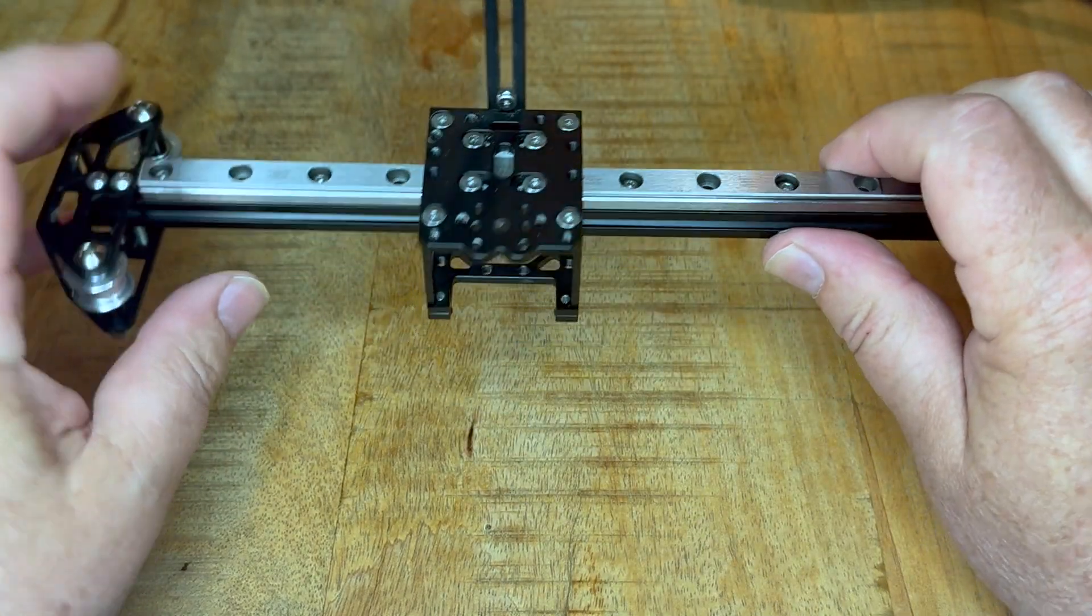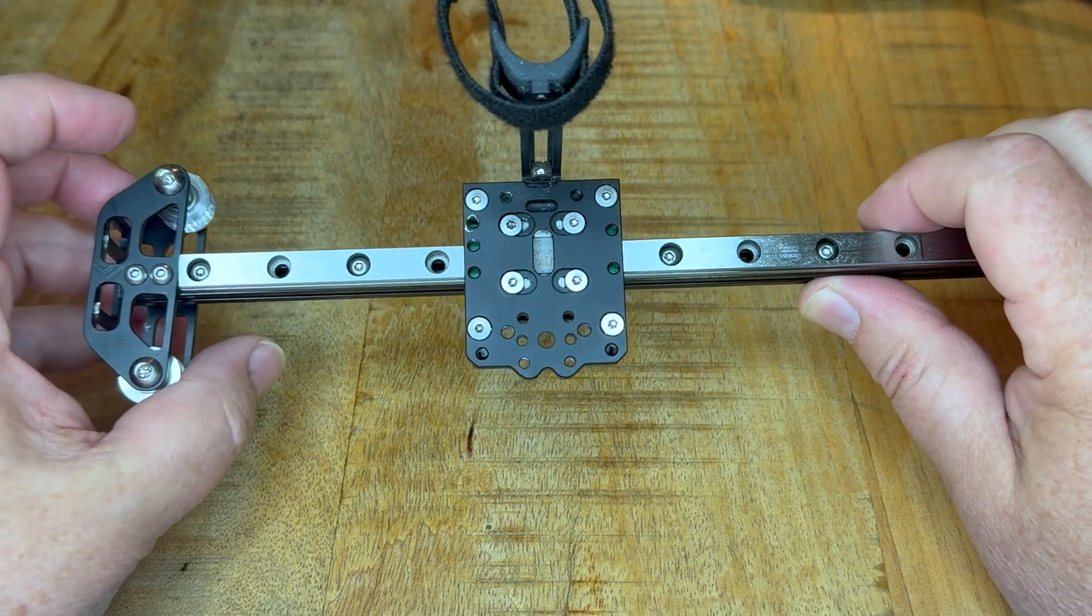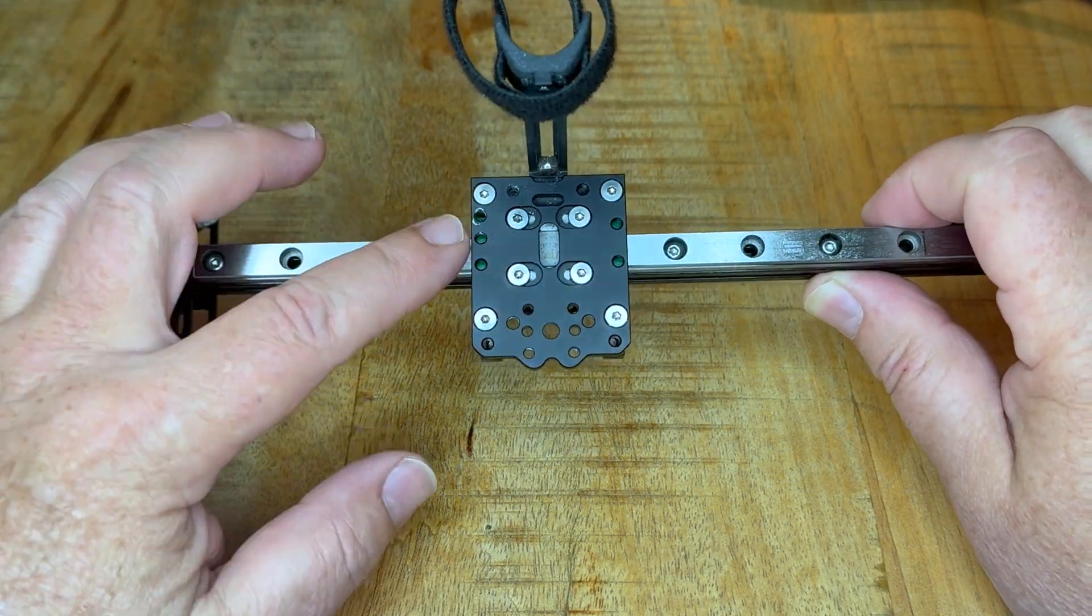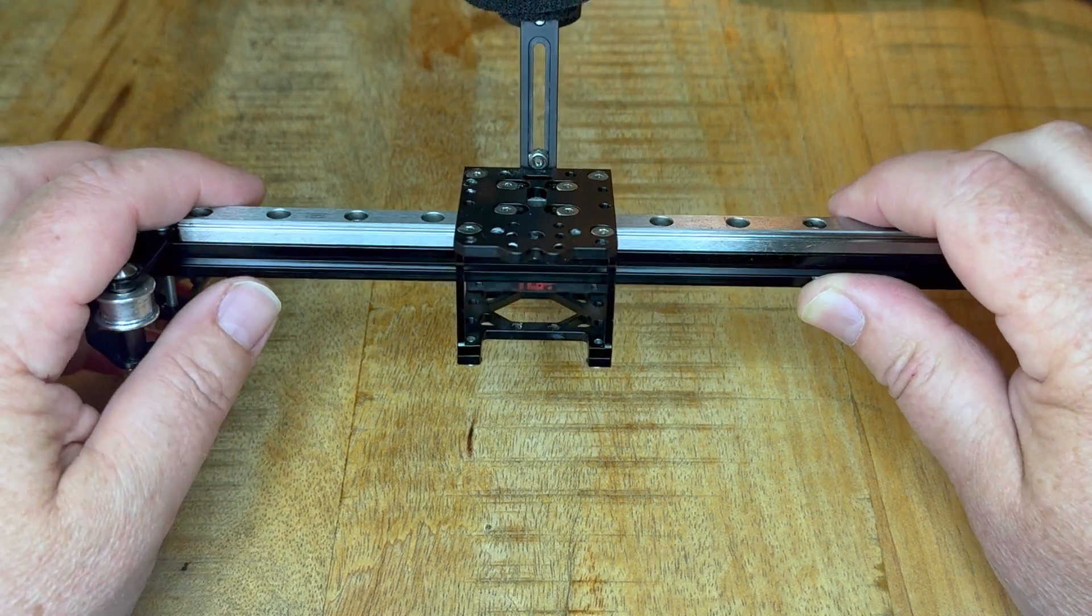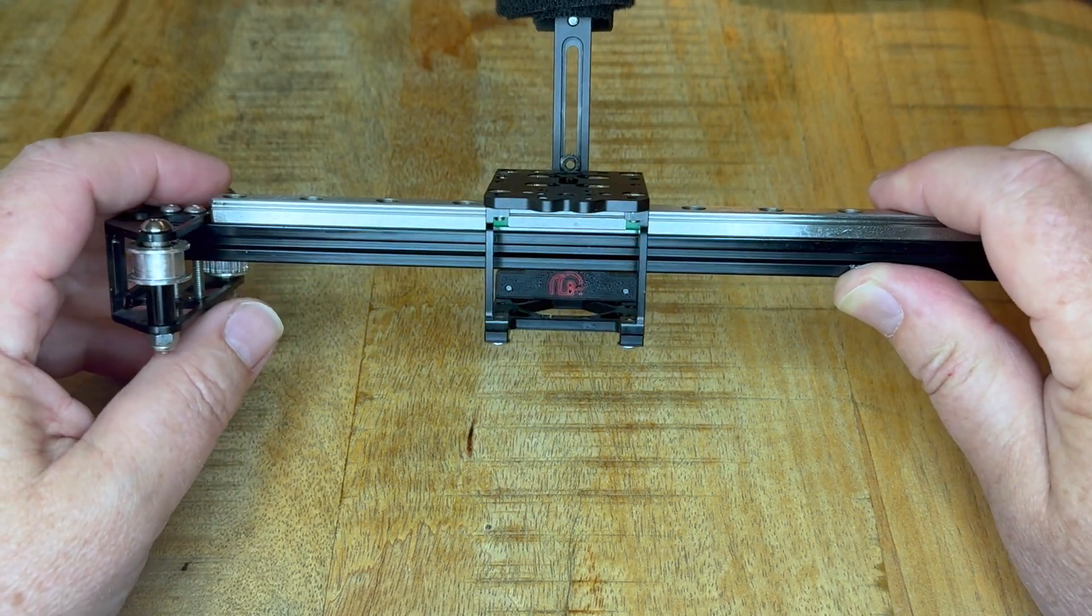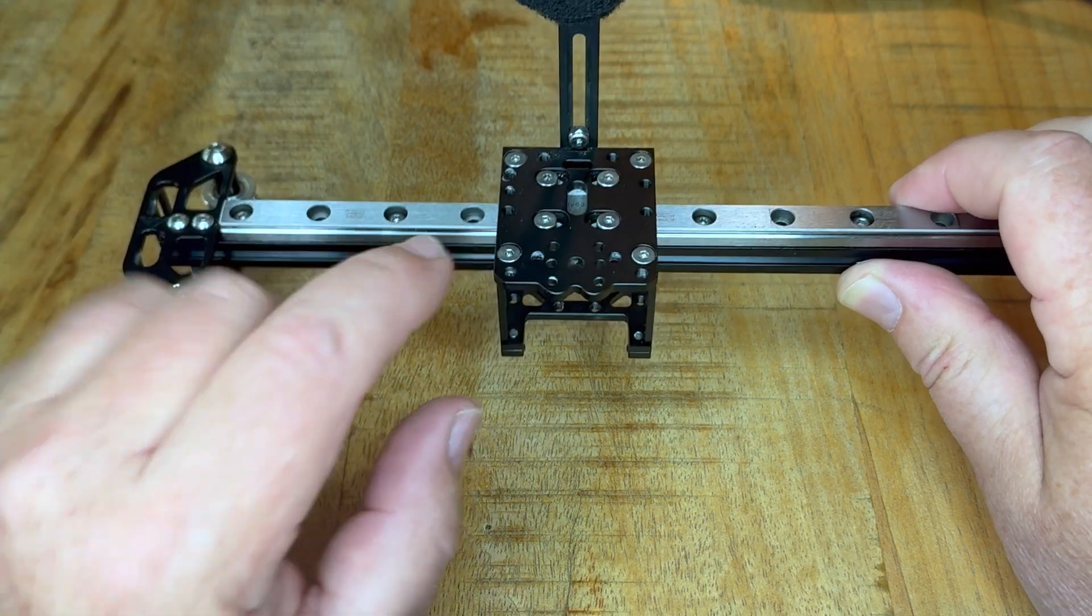My X-axis is currently not mounted on the printer because I'm busy testing the SLM parts, but I can still show you how it needs to get mounted just by quickly looking at the toolhead itself.